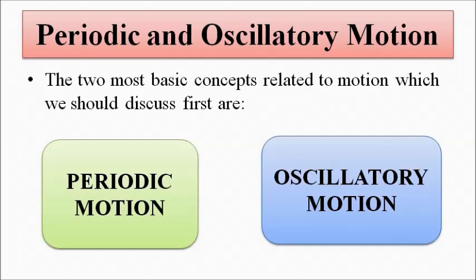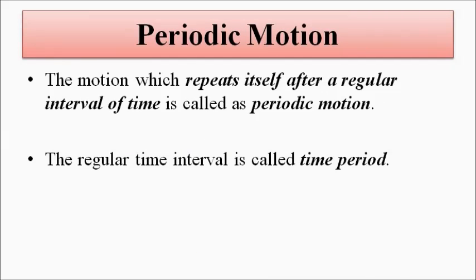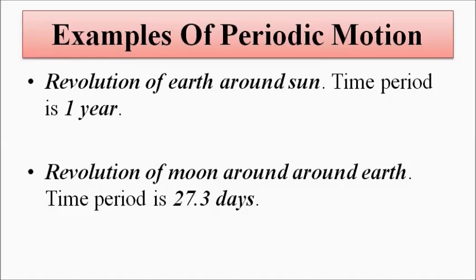Periodic motion is a type of motion which repeats itself after a fixed interval of time. This fixed time interval is called the time period of the periodic motion. A basic example is the revolution of Earth around the Sun, where the time period is approximately 365 days — one year.